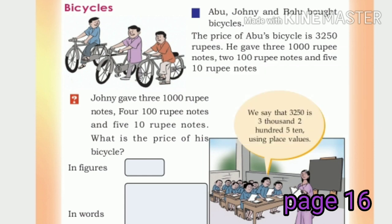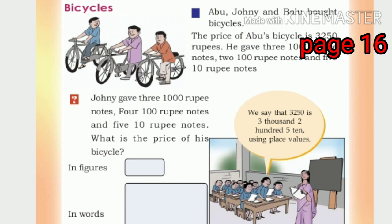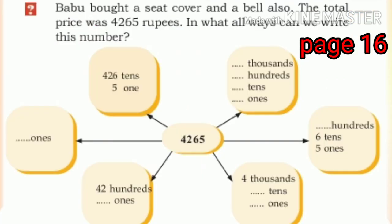Next, Babu bought a seat cover and a bell also. The total price was four thousand two hundred sixty-five. In what ways can we write this number?